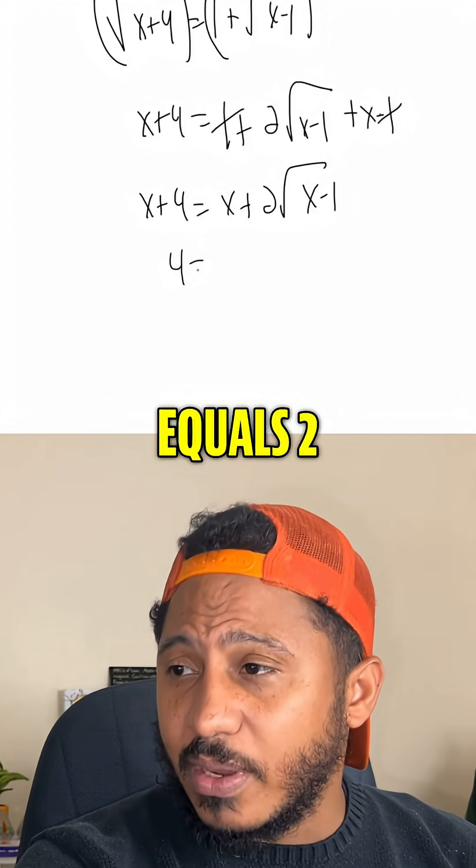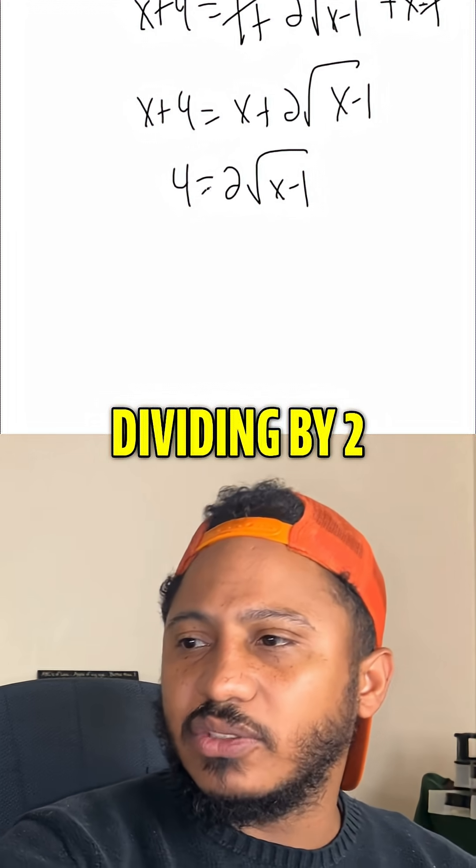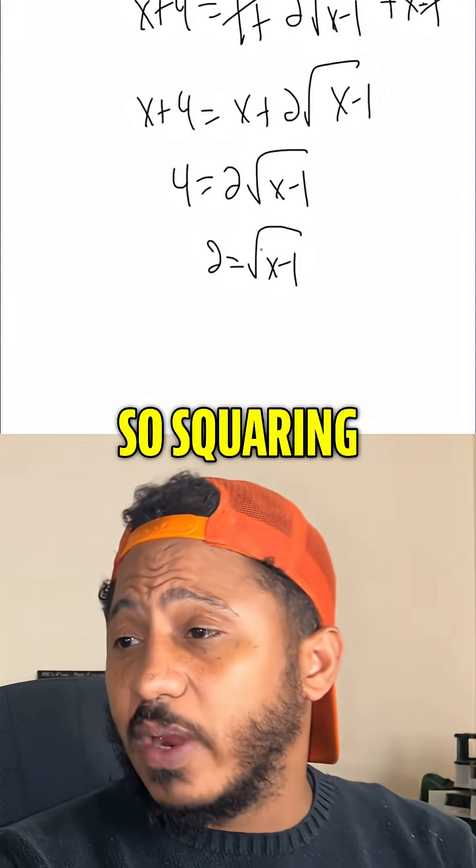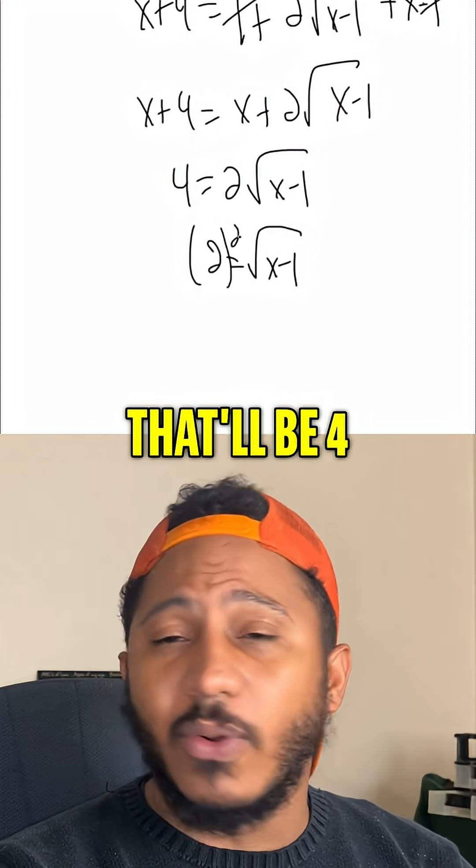Subtracting x from both sides, we get 4 equals 2 square roots of x minus 1. Dividing by 2, we get 2 equals the square root of x minus 1. Now, it's only one radical, so squaring both sides, square the left-hand side, that'll be 4.